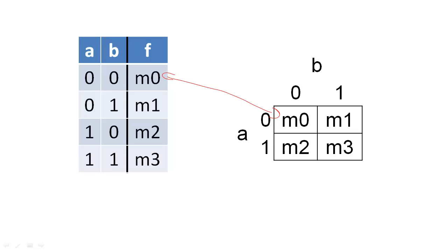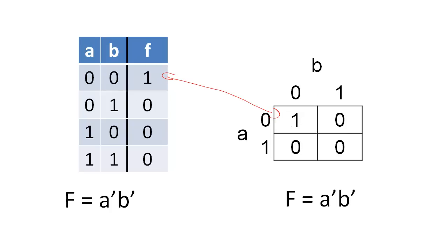Just like a truth table, we can derive a Boolean expression directly from the K-map. The advantage of the K-map for optimization is that it creates a visual representation of some of the Boolean identities.